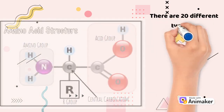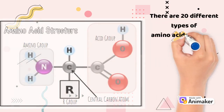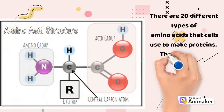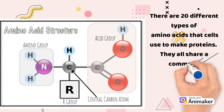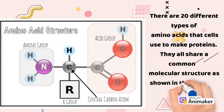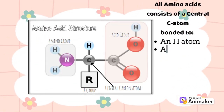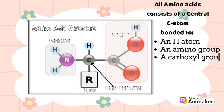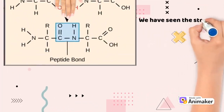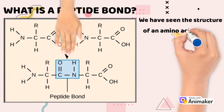There are 20 different types of amino acids that cells use to make proteins. They all share a common molecular structure, as shown. All amino acids consist of a central C-atom bonded to a hydrogen atom, an amino group, a carboxyl group, and a side chain or residual group.